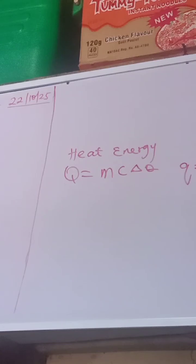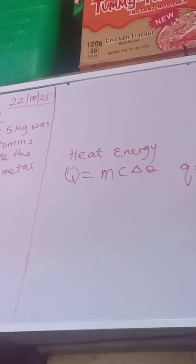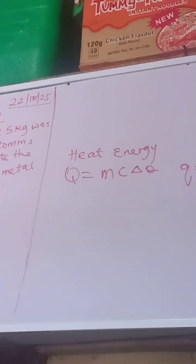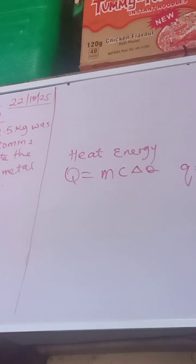Moving on, let's look at the question here. So a metal block of mass 2.5 kg was heated from 20 degrees Celsius to 80 degrees Celsius. We are given mass — mass is 2.5 kg, measured in kg, so we're not changing anything there.